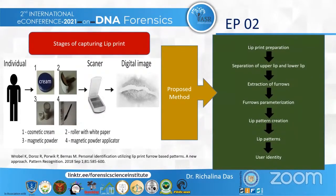Coming to the extraction of furrows: first, only the selected part — either the upper lip or the lower lip — is processed. The analyzed image was then shifted to a white background and centered. Normalization was done by stretching the image's histogram. The image formed was then filtered with the help of a Gaussian convolution filter to strengthen the furrows. Coming to parameterization and identification, the identification based on patterns of the furrows involved many pattern types such as lines and dots, with lines being the most frequent pattern used, and straight lines were analyzed from which the lip patterns were formed.